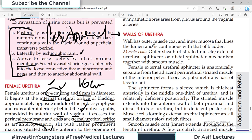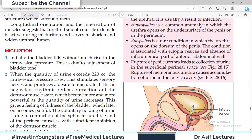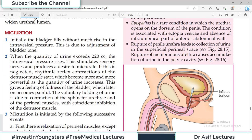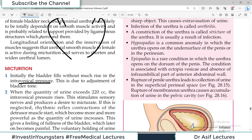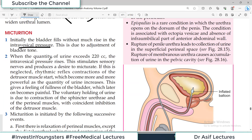The histology of the urethra wall is a topic covered separately by Inderbir Singh, so it is not discussed here. Regarding the micturition reflex: initially the bladder fills without much rise in intravesical pressure, but when the quantity exceeds about 200 milliliters the intravesical pressure rises, stimulating sensory nerves and producing the desire to micturate. If this is neglected, there is rhythmic reflex contraction of the detrusor muscle which becomes more and more powerful.